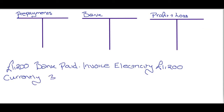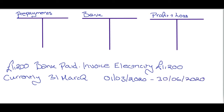Currently it is the 31st of March, so we're reporting to the 31st of March. When you look at the details of this invoice, it says the invoice is for the 1st of March 2020 all the way to the 30th of June 2020. You can work this out by months or by days, but for simplicity I'm going to do it by months. Counting March, April, May, and June — we've got four months of electricity on this invoice.